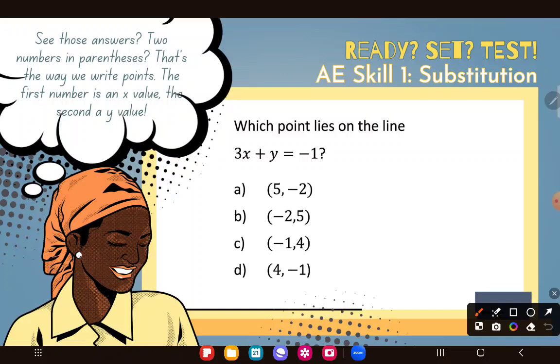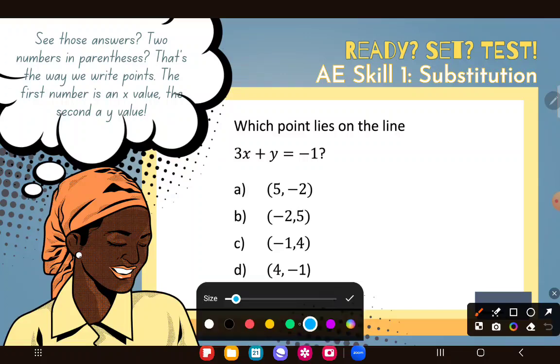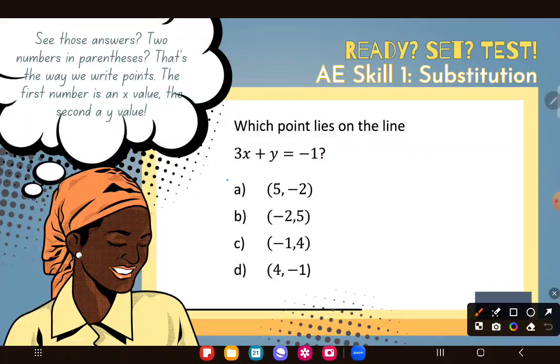And so really our only option here is to guess answers and check. The key is to know what these answers mean. Do you see the parentheses here? With two numbers inside the parentheses and a comma between them, this is the way that we write coordinate points, basically addresses on a graph. The first number is an x value and the second is a y value.